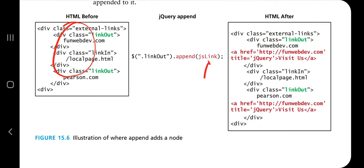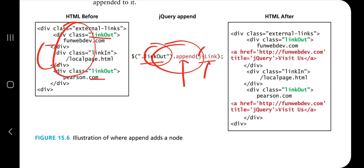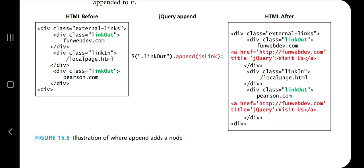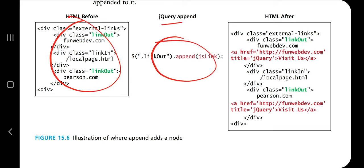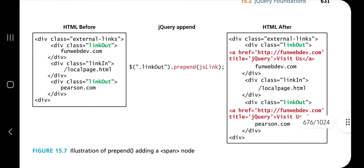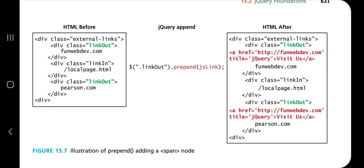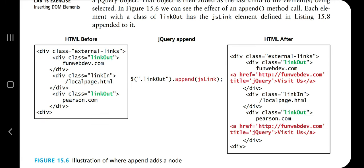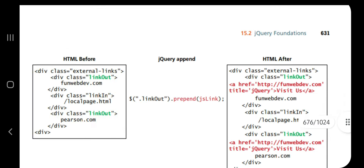Prepending and appending DOM elements: if you want to append 'jslink' after every occurrence of 'linkout', you write linkout.append(jslink) — wherever 'linkout' is found, 'jslink' is added after it. That's how jQuery's append works. If you use prepend instead, it adds the element before 'linkout'. Wrapping existing DOM into new tags: using the wrap() function, you can wrap elements such as 'div.class.gallery.link' inside two div tags — the code uses a callback function for this.